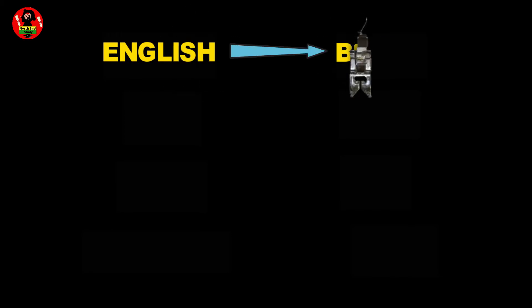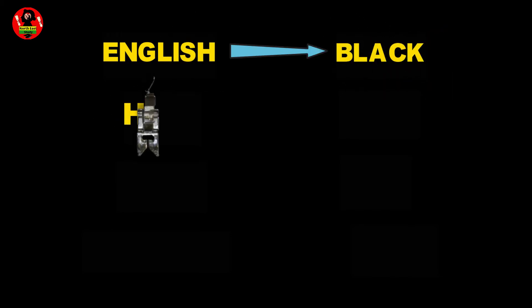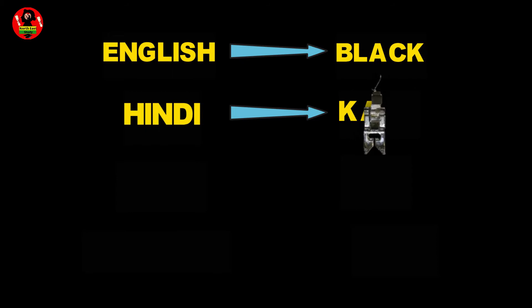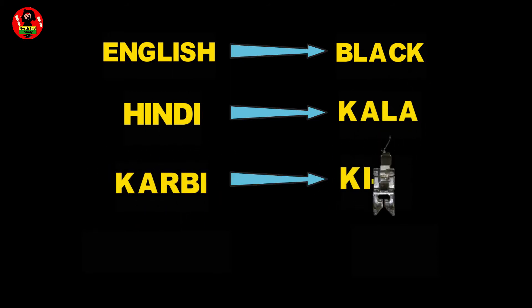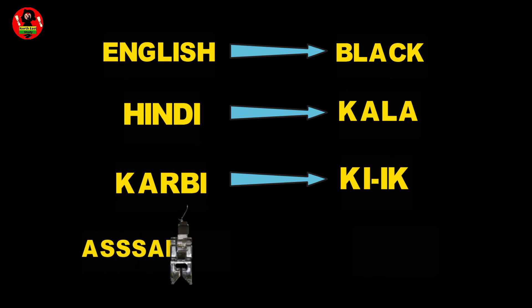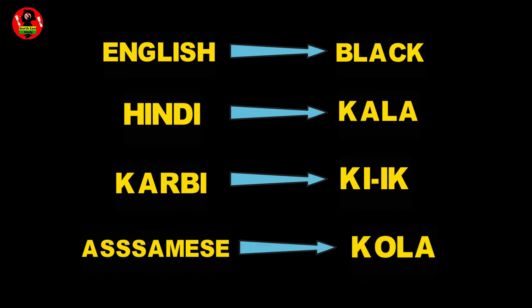English: Black. Hindi: Kalah. Karbi: Kiet. Assamese: Kolah.